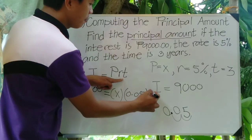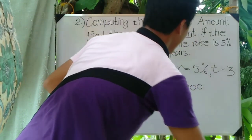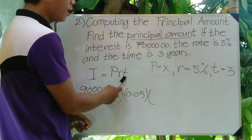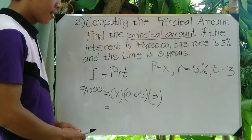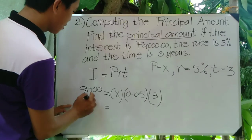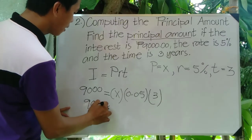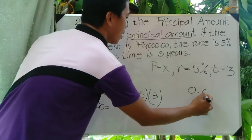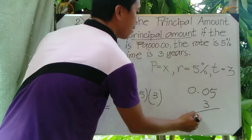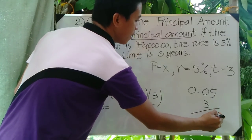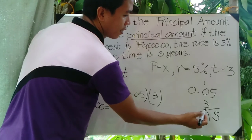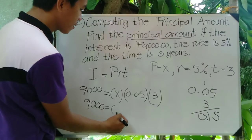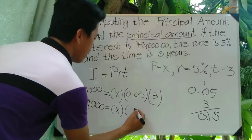For the value of T we have 3. Now multiply 0.05 times 3: three times five is 15, carry one; three times zero is zero. So that gives us 0.15. Copy the x: we now have x times 0.15, which is 0.15x.